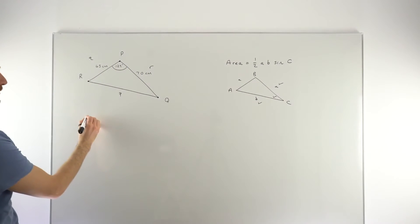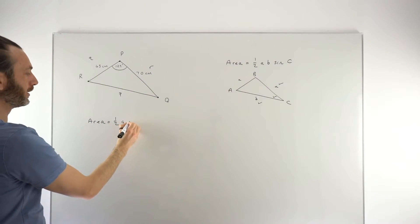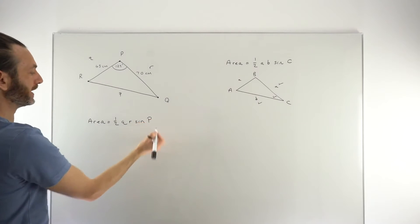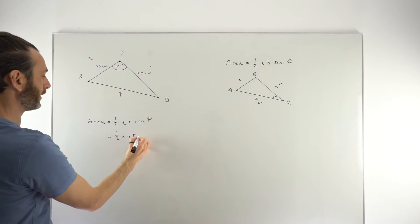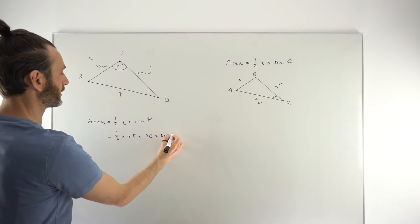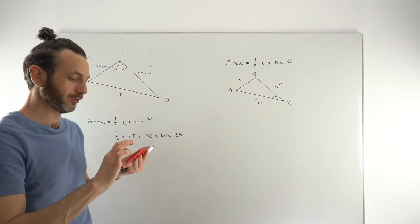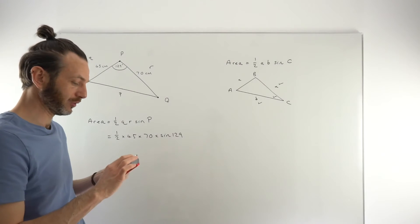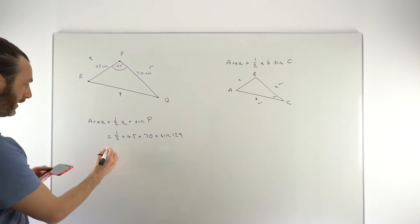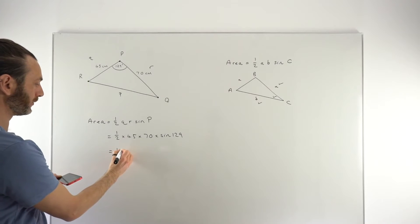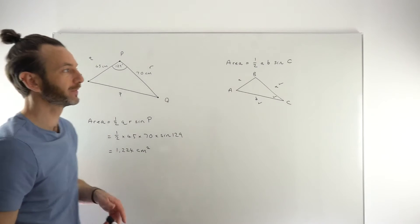We update the letters to match our question. The area is ½ × Q × R × sin P, where Q = 45, R = 70, and the included angle P = 129°. So it's ½ × 45 × 70 × sin(129°). We've made the interpretation — it's just a case of putting this into the calculator carefully. That comes out to be 1224. The units were centimetres, so since we're working with area the final answer is 1224 cm².